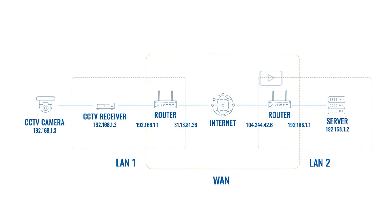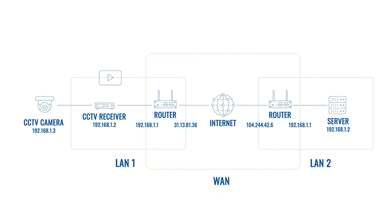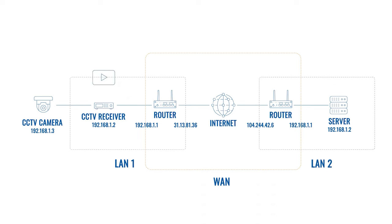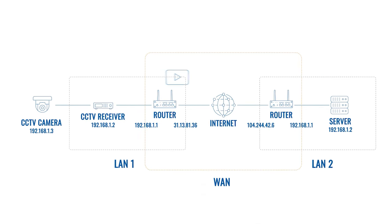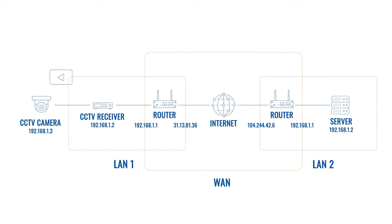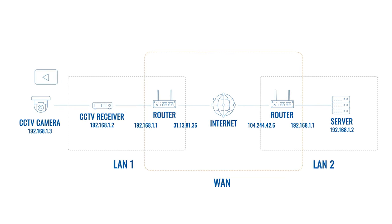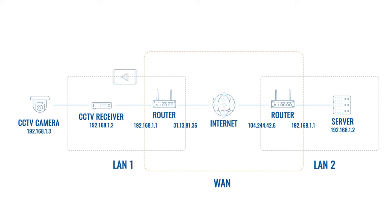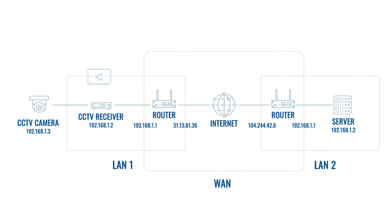Let's come back to that CCTV camera. Because it wants to send a video file to a server from a different LAN, the router, as a great party host, takes care of that. It transfers the video file to a server via WAN using a public IP address. If a receiving server wants to send something back, the router delivers it to the CCTV camera. Basically, WAN allows different remote LANs to connect and exchange information with one another.